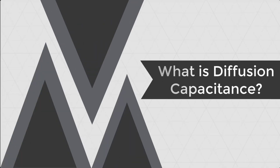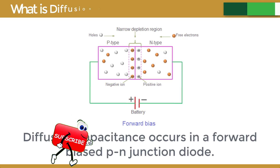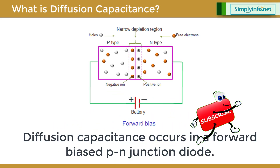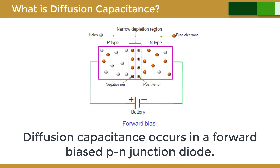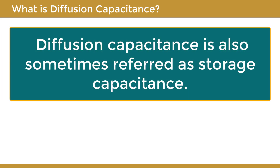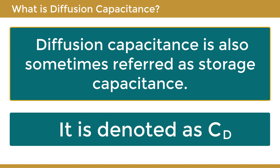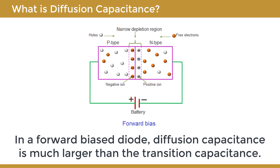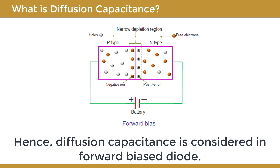What is Diffusion Capacitance? Diffusion Capacitance occurs in a forward biased PN junction diode. It is also sometimes referred to as storage capacitance, and is denoted as CD. In a forward biased diode, diffusion capacitance is much larger than the transition capacitance. Hence, diffusion capacitance is the one considered in a forward biased diode.